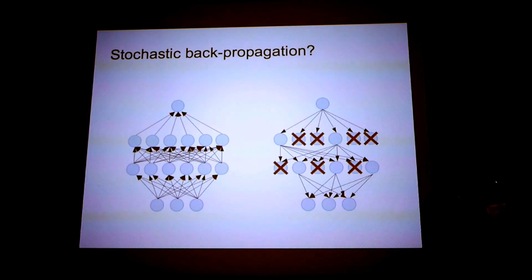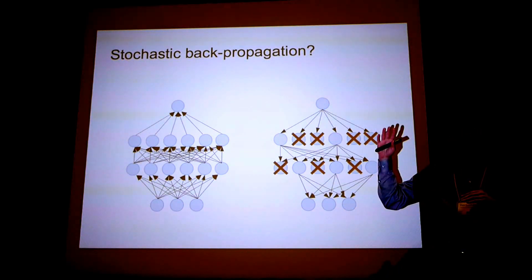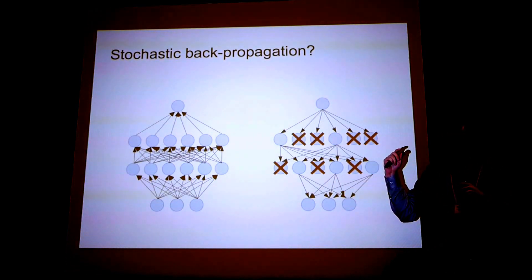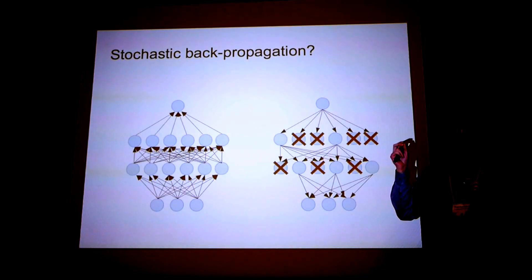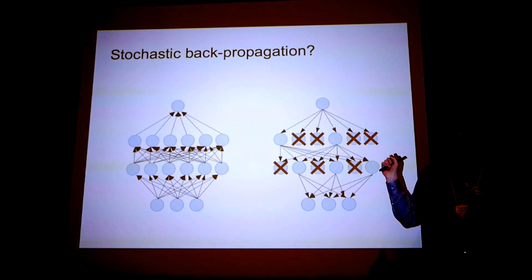And the next one, so in variant two, we ask the question, what happens when we perform dropout or something like dropout in the back propagation step? So suppose we forward propagate deterministically. And then instead of the standard back propagation algorithm, we're going to send gradient signals backwards, but we're only going to send gradient signals through a subset of the neurons in each layer.